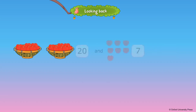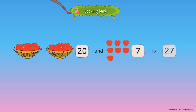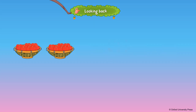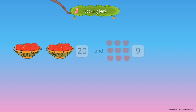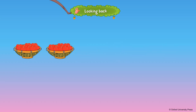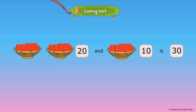If seven more apples are added, we will have 27 apples. 20 and 7 is 27. If eight more apples are added, we will have 28 apples. 20 and 8 is 28. If nine more apples are added, we will have 29 apples. 20 and 9 is 29. If 10 more apples are added, we will have 30 apples. 20 and 10 is 30.